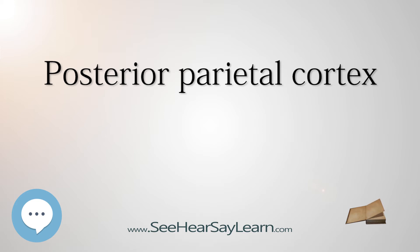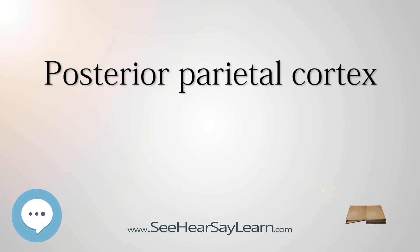Posterior parietal cortex is consistently activated during episodic retrieval, but most hypotheses as to why this is are speculative and usually make some connection between attention and episodic recall. Damage to the posterior parietal cortex results in deficits in visual working memory. Patients could name objects that they had previously seen, but were impaired at recognizing previously presented objects, even if these objects had a familiar name.